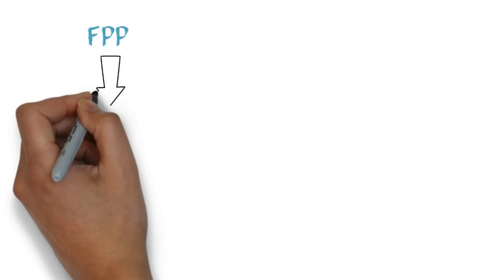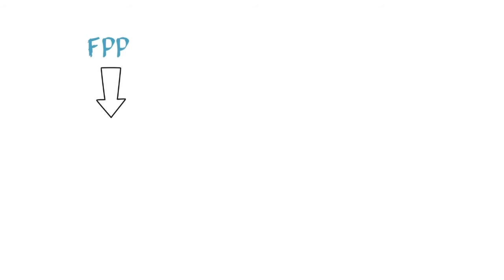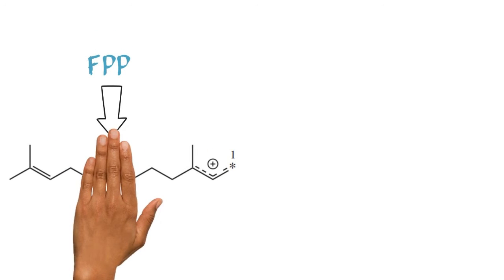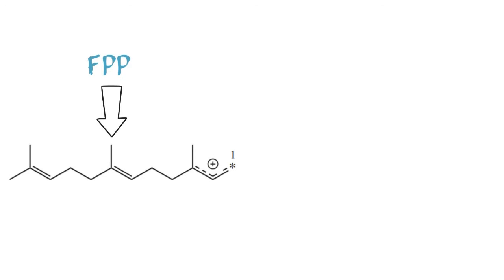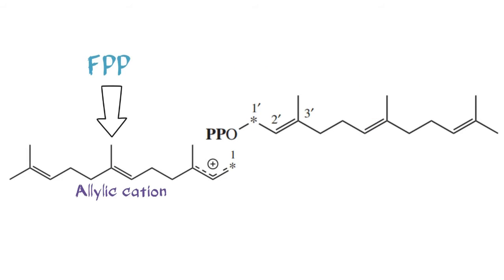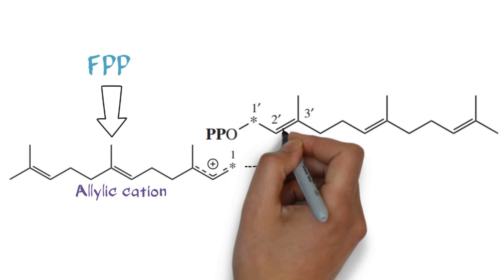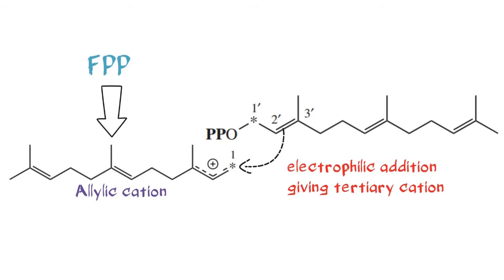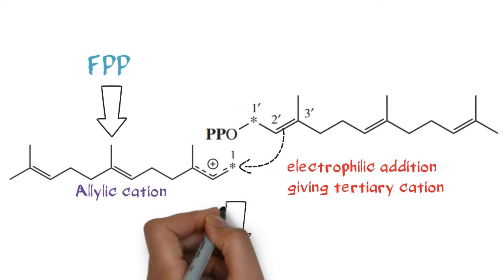The formation of triterpenoids begins with the yield of squalene, which is formed from joining together tail to tail two molecules of FPP. Electrophilic addition gives a tertiary cation from the double bond of the first FPP to the second FPP.